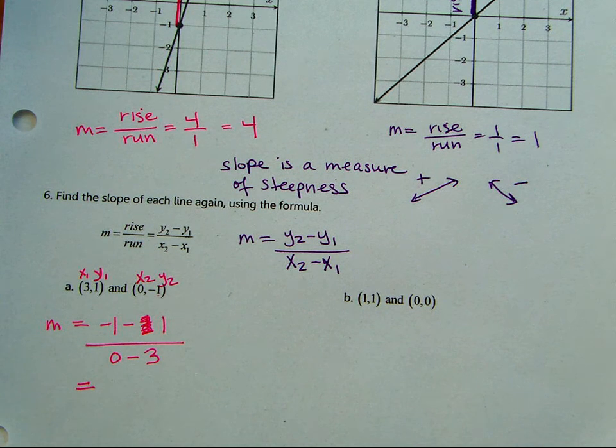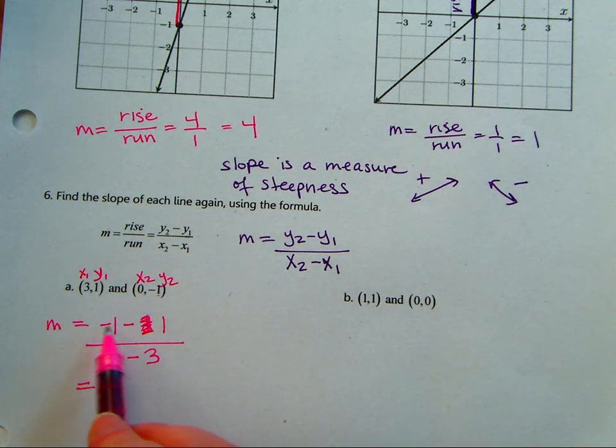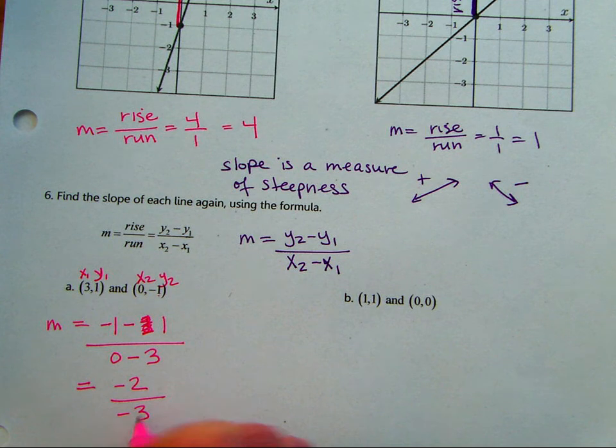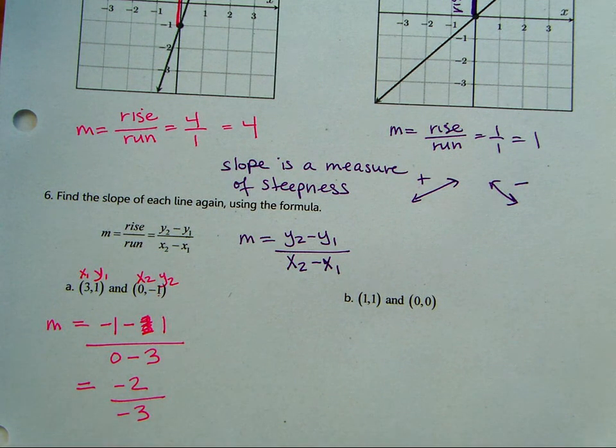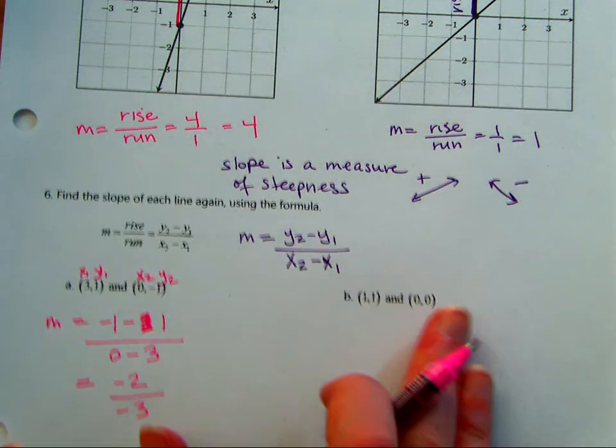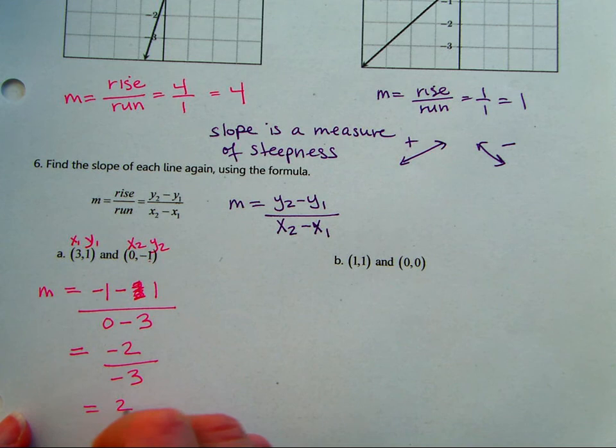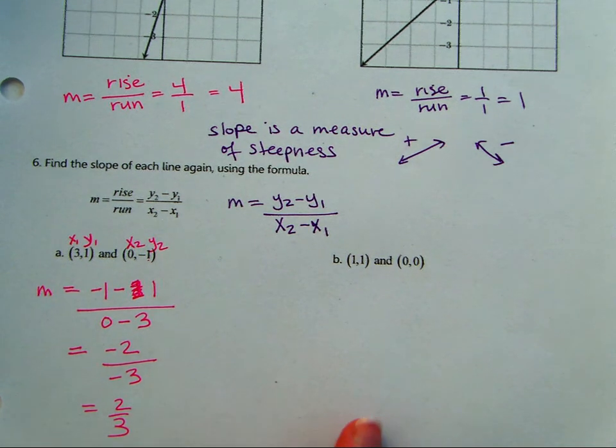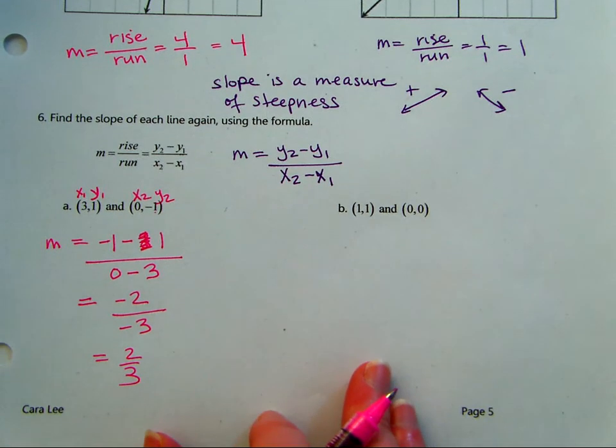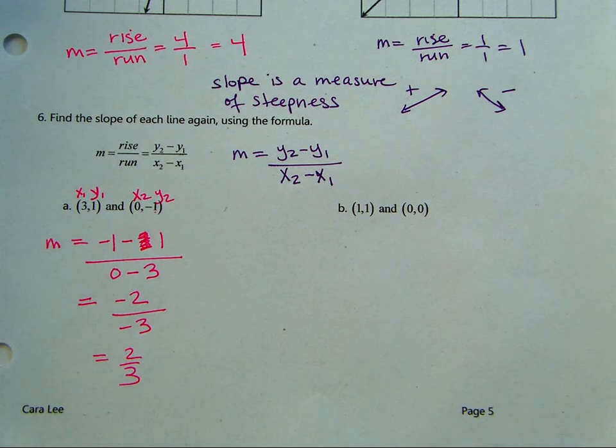It's not going to come out to 4. I think b is the same. So negative 1 minus 1, negative 2, over negative 3. Two negatives makes a positive, so our slope is 2 thirds. So this would be a slope triangle of up 2 over 3.